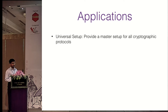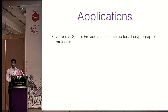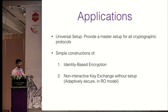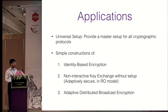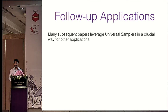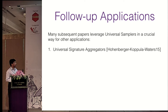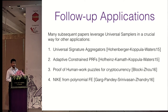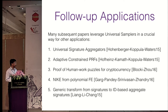What are the applications of universal samplers? The main application is a master setup for all cryptographic protocols. Additionally, it gives simple constructions of ID-based encryption, non-interactive key exchange without setup in the random oracle model (adaptively secure, which was not known before), and adaptive distributed broadcast encryption. Several subsequent papers have leveraged techniques from universal samplers: universal signature aggregators, adaptive constraint PRFs, proof-of-human-work puzzles for cryptocurrency, non-interactive key exchange from polynomial functional encryption, and a generic transformation from signatures to ID-based aggregate signatures.